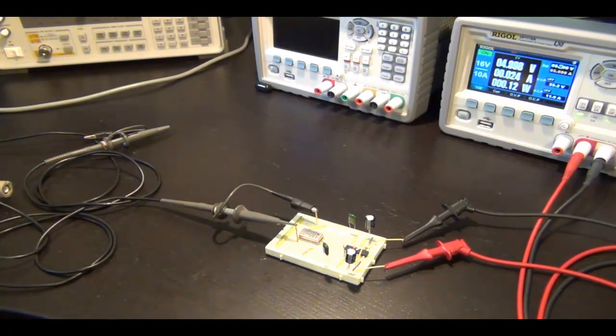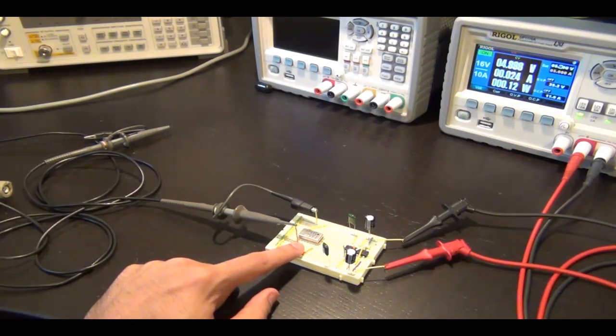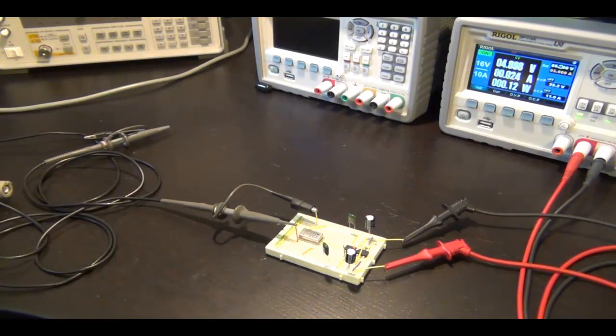So right now the frequency counter is saying the same thing, 3.999968 MHz. Now, I want to cool this by about maybe 30 or 40 degrees Celsius and see how much effect that has on the frequency of oscillation. So how am I going to cool it?